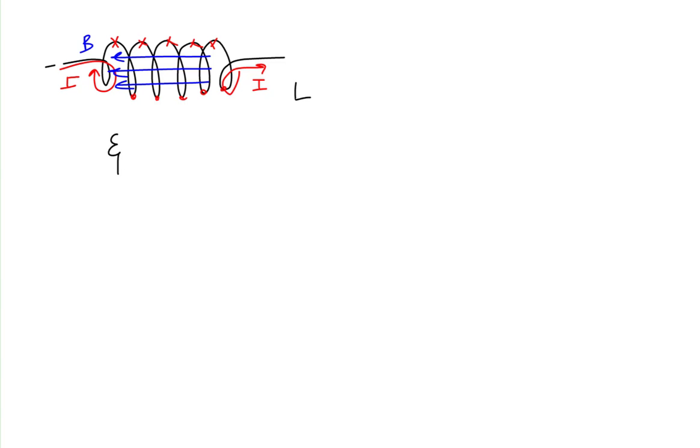We're going to show that the induced EMF of an inductor is equal to minus the inductance of the inductor times the time rate of change of the current in the inductor. We're going to begin by using Faraday's law. Faraday's law says that an induced EMF is equal to the time rate of change of magnetic flux.